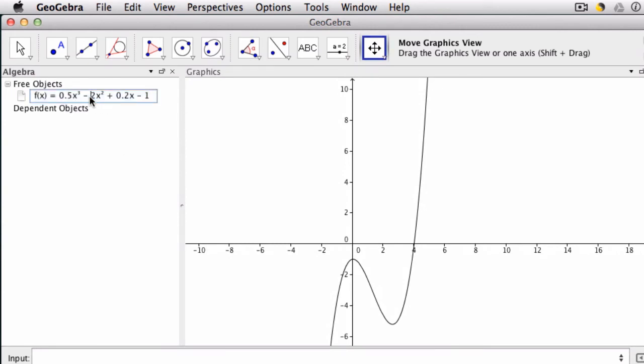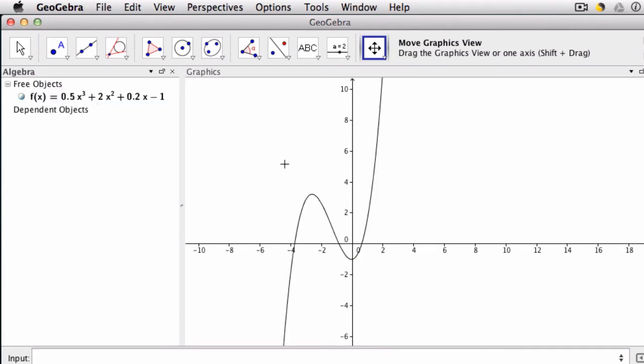What if I change this to plus 2x squared instead of minus? So plus 2x squared, notice it shifts up. So already, by playing with this, students can get a sense of how the cubic polynomial works.